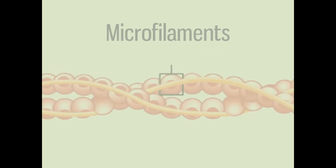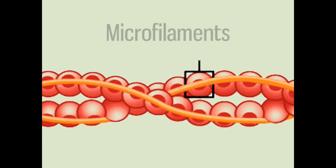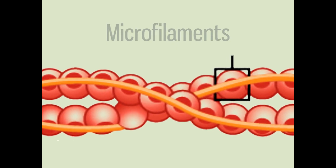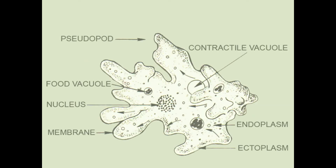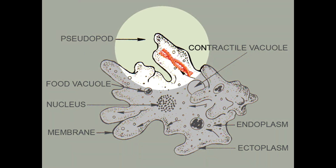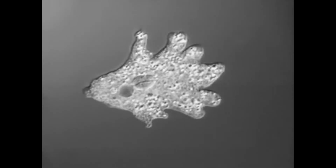Like microtubules, microfilaments can also give a cell motility, though via a different mechanism. They don't form external structures like flagella and cilia, but they can help cells move by changing their shape. Amoeba use this movement to crawl across a surface using extensions called pseudopodia, or false feet. As actin filaments grow rapidly in one direction, they push and deform the cell to create a foot on one side. You can see this movement in action in this video.